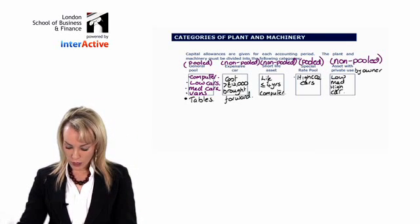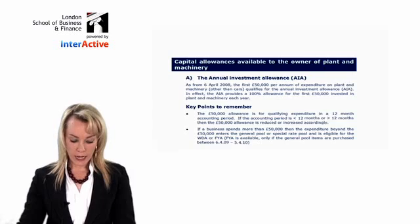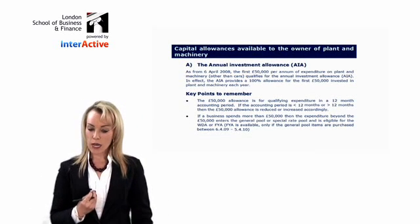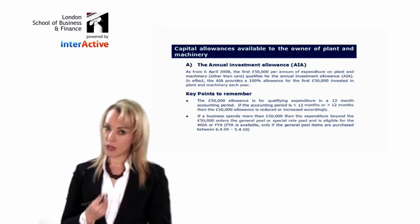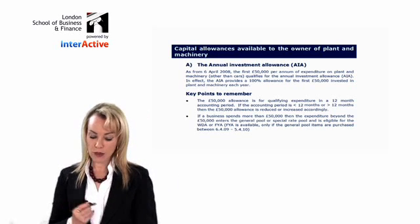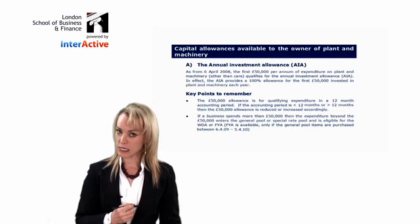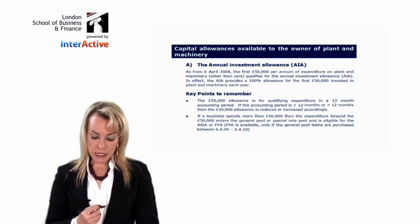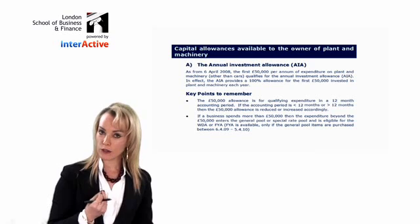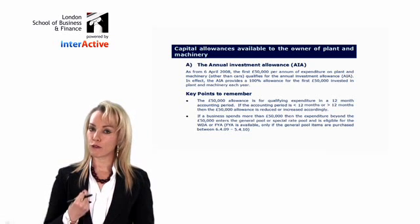The next thing we need to know is all the different allowances that you can get. The first one is called an annual investment allowance or an AIA for short. Now the rate of AIA is 100%. That means that if you buy some plant and machinery, but the AIA is not available for cars.